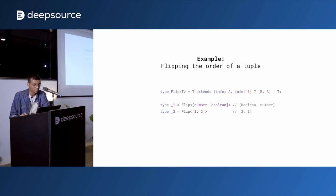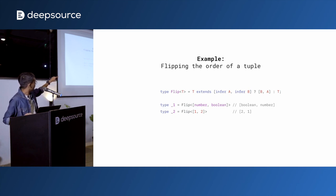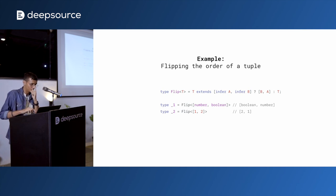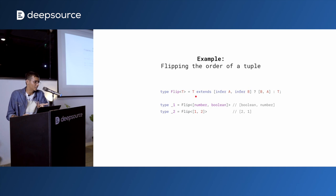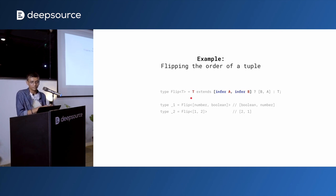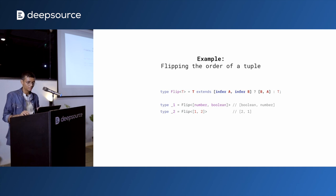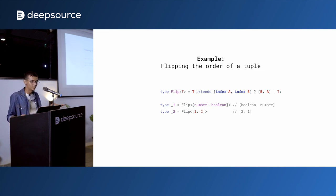Here's an example where I take a tuple type and flip the order of items. Flip<[number, boolean]> gives me [boolean, number]. The flip definition checks if T extends [infer A, infer B] — asking the compiler if it can deconstruct T into a tuple where the first item is type A and the second is type B. If this deconstruction is possible, it evaluates the then block which returns [B, A], flipping them. Otherwise it reverts to T. All of this is completely compile time — zero JavaScript generated.